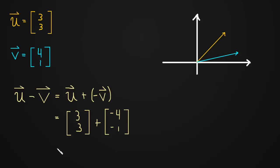We do that addition and we get 3 plus negative 4 is negative 1. 3 minus 1 is 2. And so this subtraction is just this new vector, [-1, 2]. Simple enough.